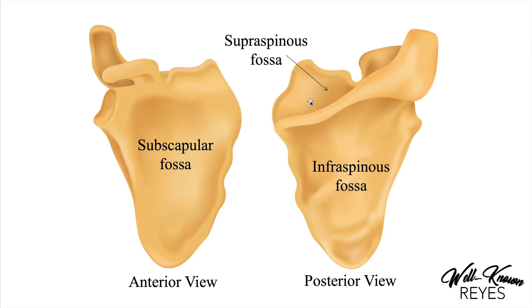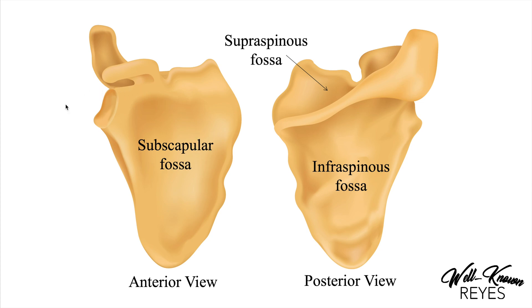Lastly we have the supraspinous fossa, where the supraspinatus originates. A fossa is just a shallow depression on the surface of a bone. The supraspinatus originates in this fossa and inserts on the greater tubercle of the humerus. Underneath we have the infraspinous fossa, where the infraspinatus originates, also inserting on the greater tubercle of the humerus. The lateral border is where the teres minor originates, and it also inserts onto the greater tubercle. On the anterior view we have the subscapular fossa, where the subscapularis originates, and it inserts on the lesser tubercle of the humerus. Make sure you know supraspinous fossa, infraspinous fossa, and subscapular fossa.